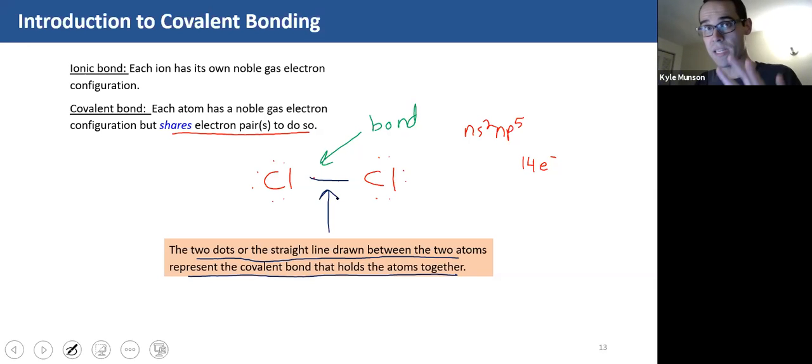So again, they had 14 electrons here. And the only way for them to both have eight, basically to have that noble gas configuration is if they share. They can't steal from one another here. So that's what we mean by a covalent bond.